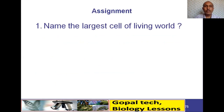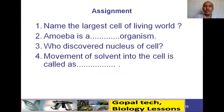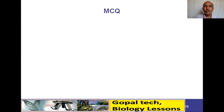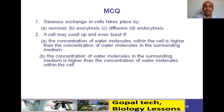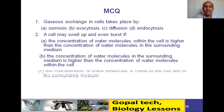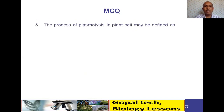Assignment questions: Name the largest cell of the living world. Amoeba is a blank organism. Who discovered the nucleus of the cell? Movement of solvent into the cell is called blank. Pause the video and write your answers, then check. Answers: ostrich egg is the largest cell, amoeba is unicellular, Robert Hooke discovered the nucleus, and the movement of solvent is called osmosis. For MCQs: gaseous exchange in cells takes place by diffusion, and a cell may swell up if the surrounding water concentration is higher.